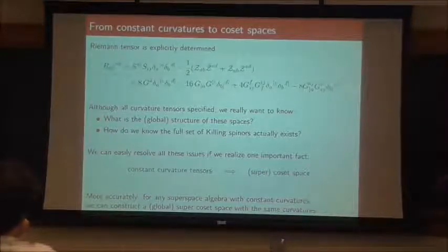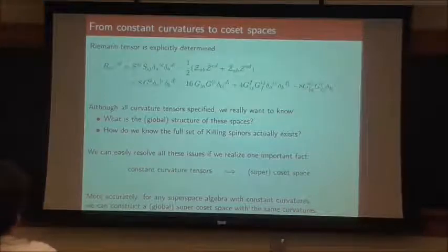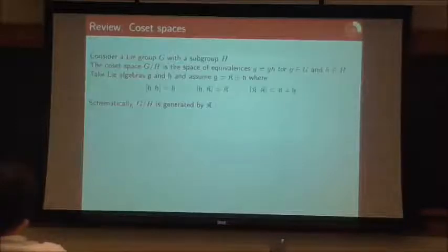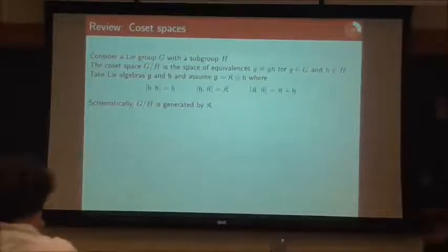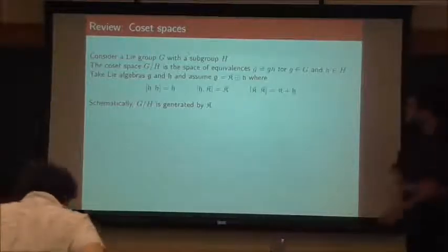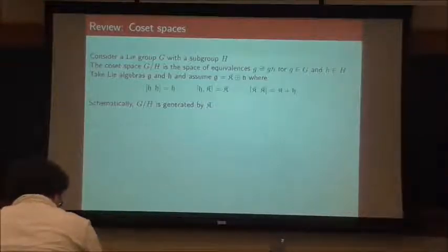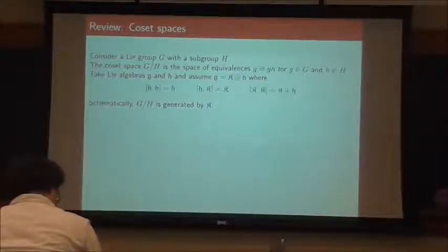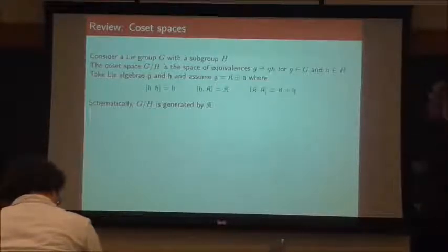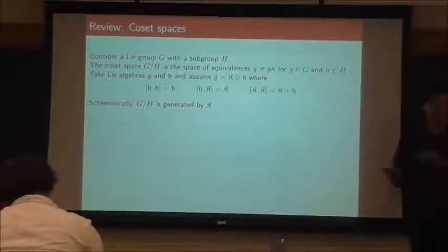For any superspace algebra that has constant curvatures, I can construct a global supercoset space with those same curvatures. This is the fine print I talked about on the first slide — I can exhibit a global supercoset space with the same algebra. It's possible that there are spaces that I could construct with discrete quotients that I won't be talking about — I'm just going to be dealing with the global spaces.